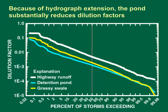This graph shows the potential effectiveness of a grassy swale and a detention pond for modifying downstream storm flows. The white line shows dilution factors without BMP treatment, and the light blue line and yellow line show the dilution factors that would result if a pond or a swale is used. Although the swale seems to have better infiltration capacity, the pond outperforms the swale because it extends the hydrograph. This example shows how SELDOM modeling can inform planning level analyses and mitigation design efforts.